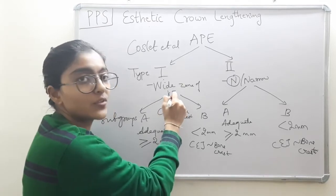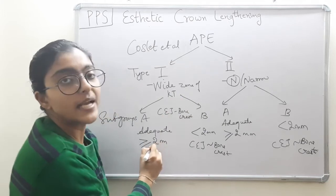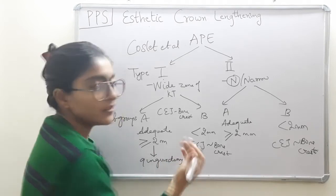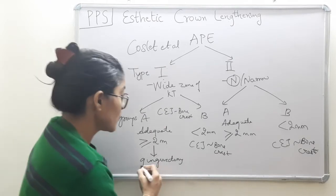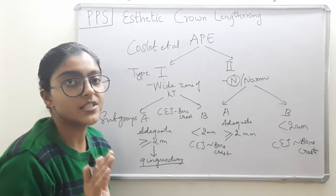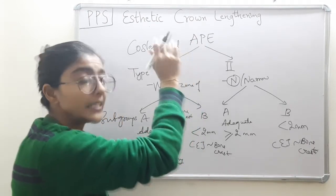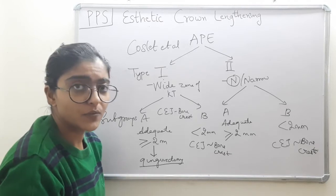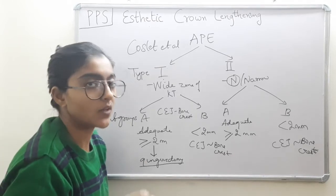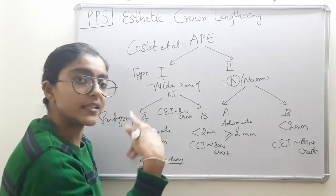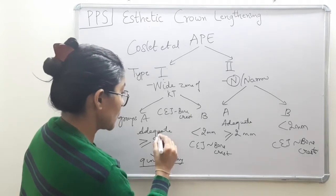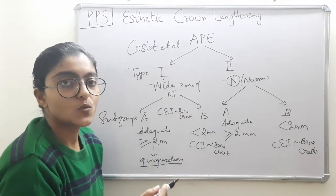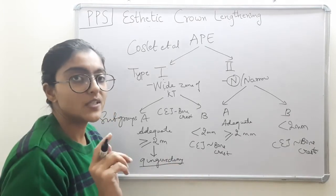In type 1A, there is a wide zone of keratinized tissue and the distance between CEJ and bone is adequate. So here we will perform gingivectomy followed by gingivoplasty, because it is an aesthetic procedure — crown lengthening by gingivectomy, involving only soft tissue manipulation.